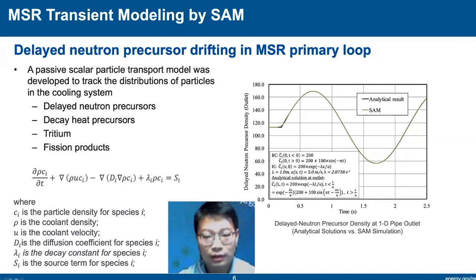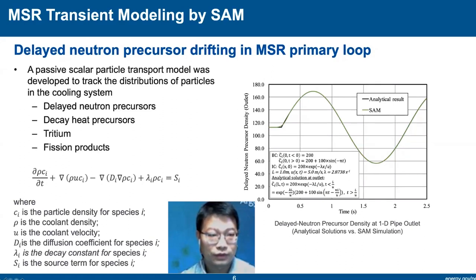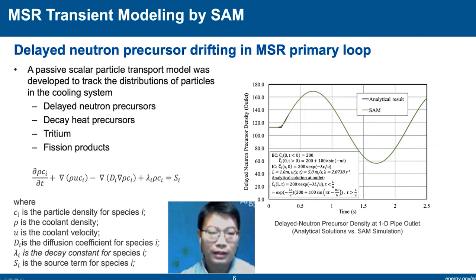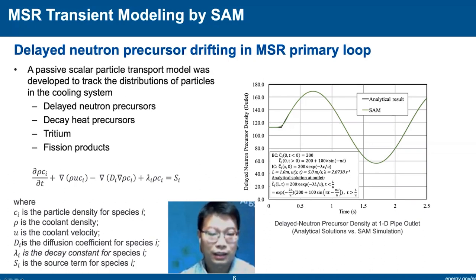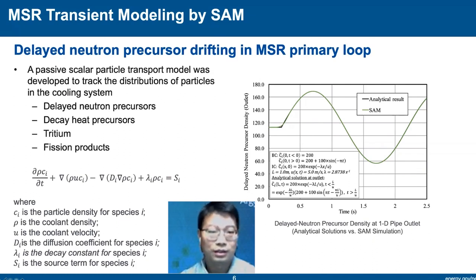For MSR transient modeling, an important feature is the delayed neutron precursor drift. We developed a general scalar transport capability so the code can capture delayed neutron precursor concentrations throughout the system. This same capability can be applied for the transport of other radioactive isotopes such as decay heat precursors, tritium, or other fission products. This forms one of the foundations for MSR transient simulation as well as mass transport inside the fluid.